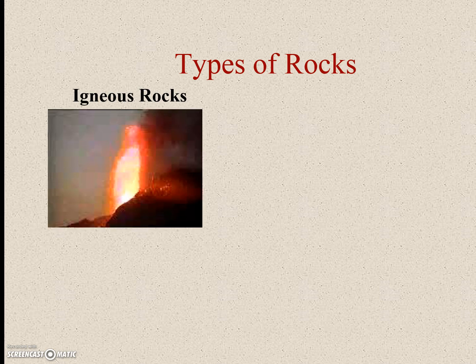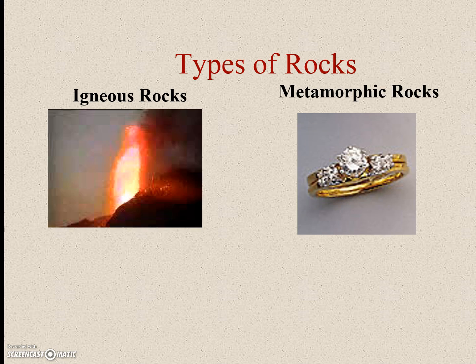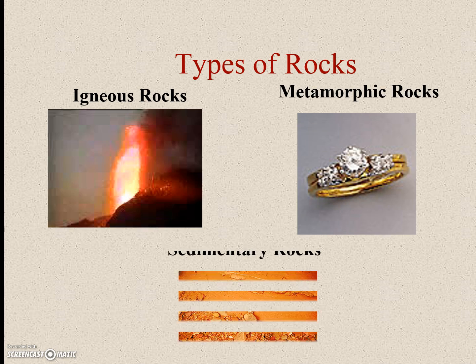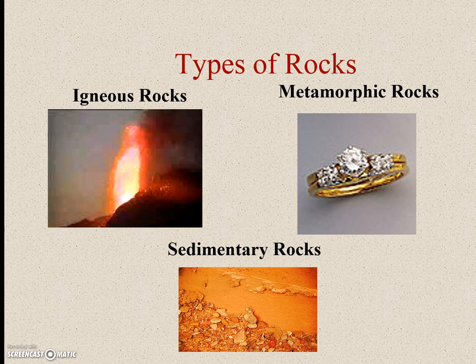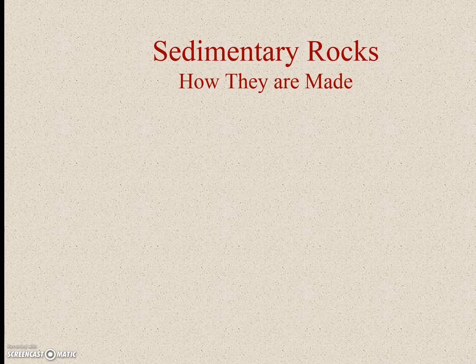So the types of rocks are igneous rocks, which have to do with volcanoes; metamorphic rocks, which have to do with heat and pressure; and sedimentary rocks, which have to do with rivers, compaction, cementation, things like that.